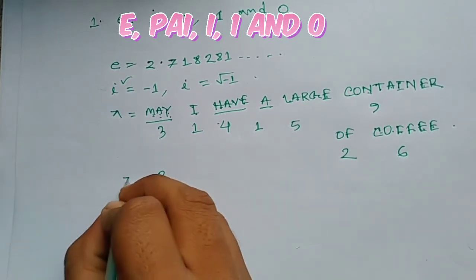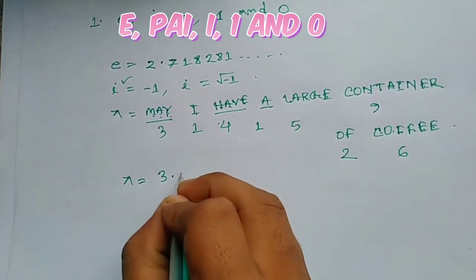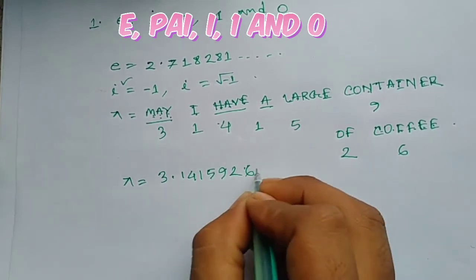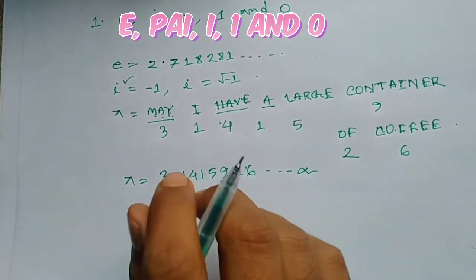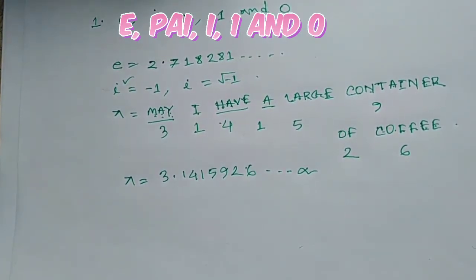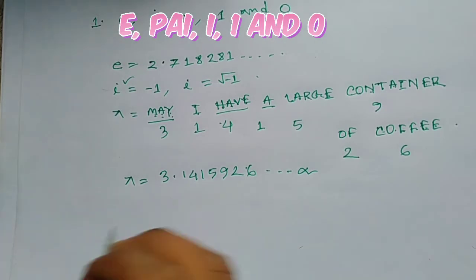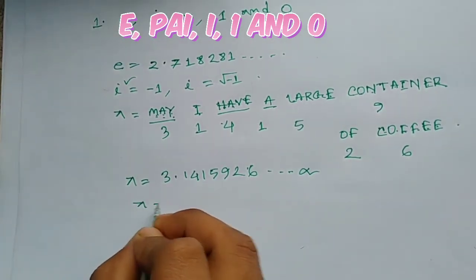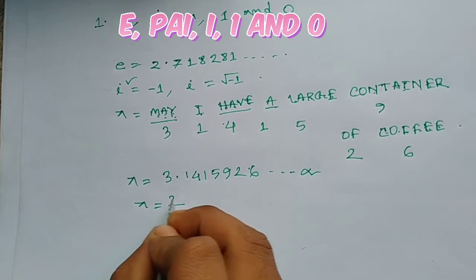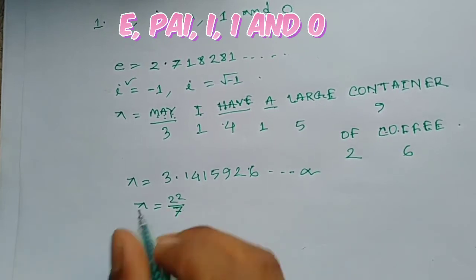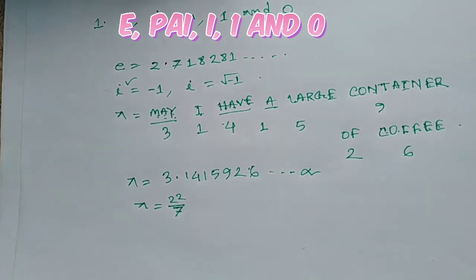The value of pi is 3.1415926... continuing to infinity. Pi is approximately equal to 22 divided by 7.